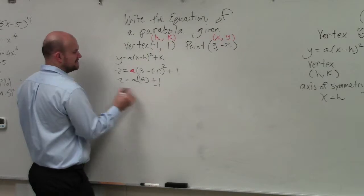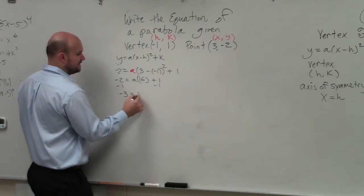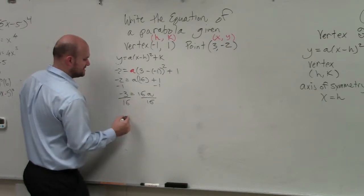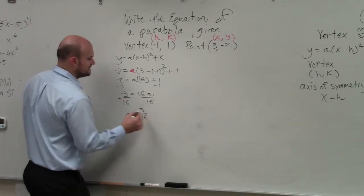Now I just solve for A. Minus 1, minus 1. Negative 3 equals 16A. Divide by 16. A equals negative 3 over 16.